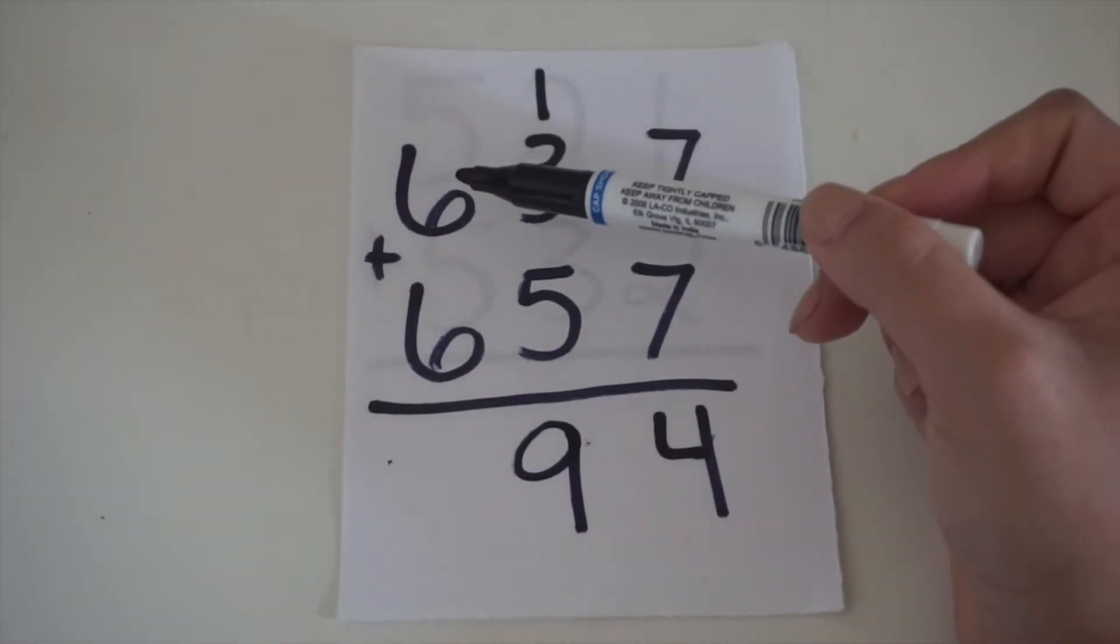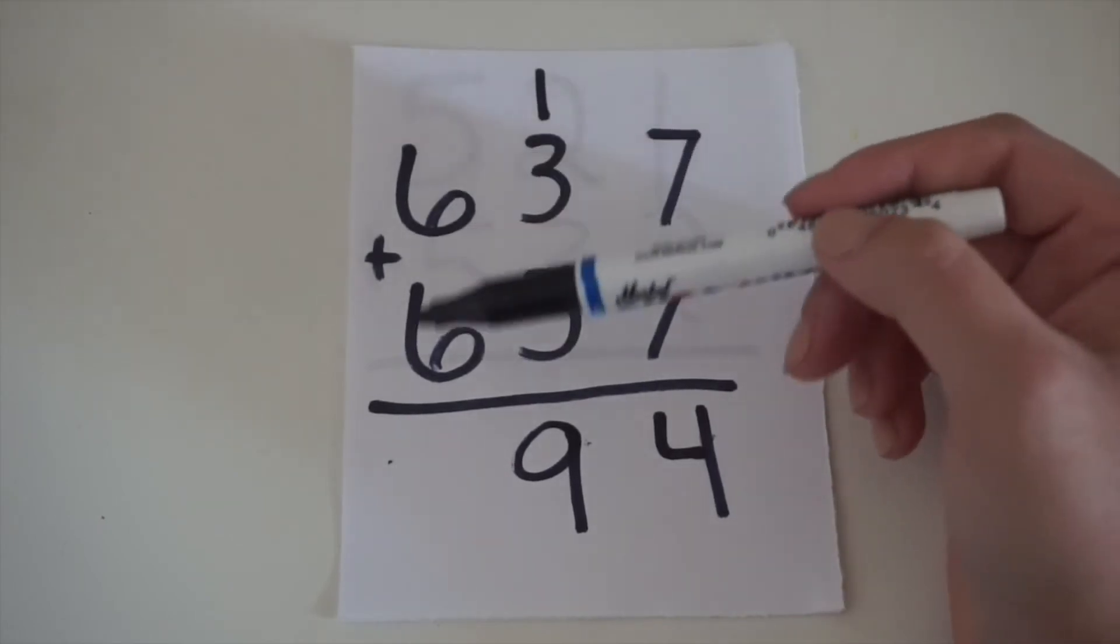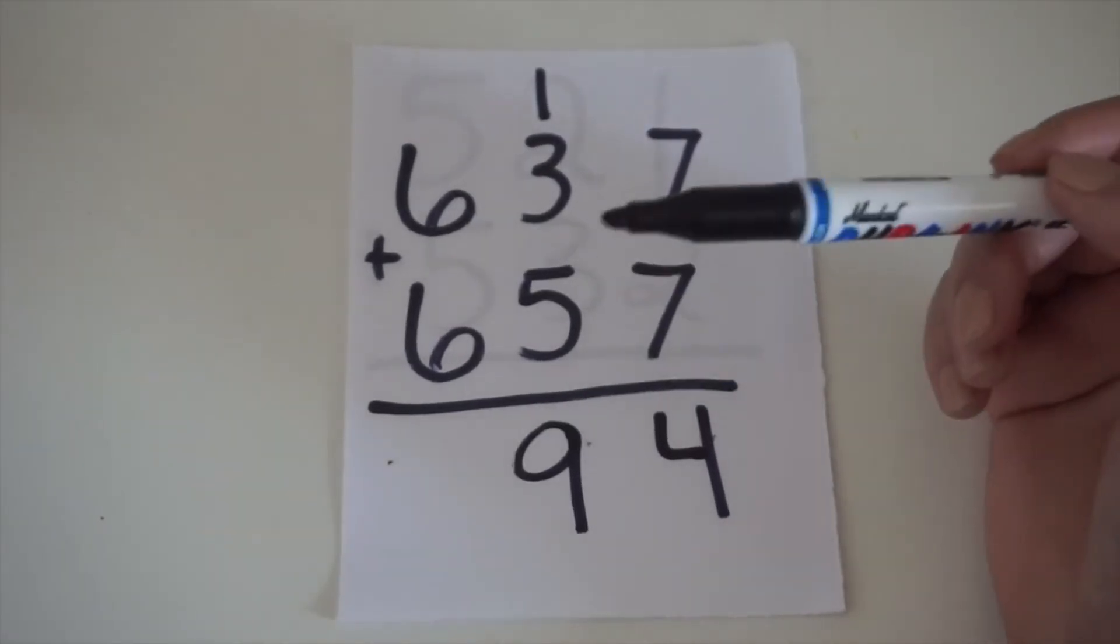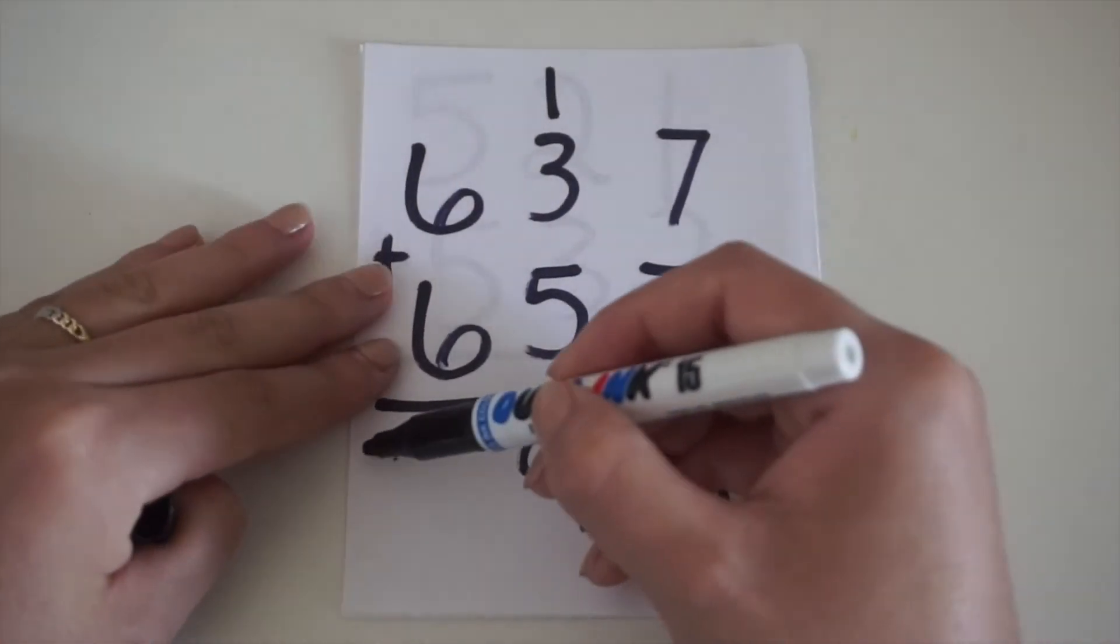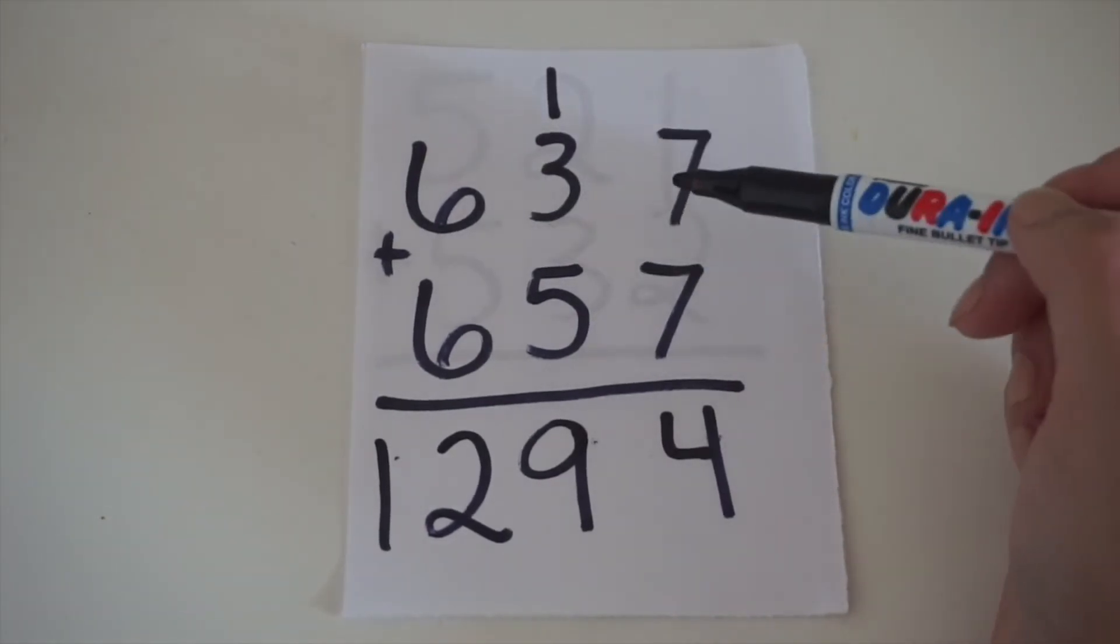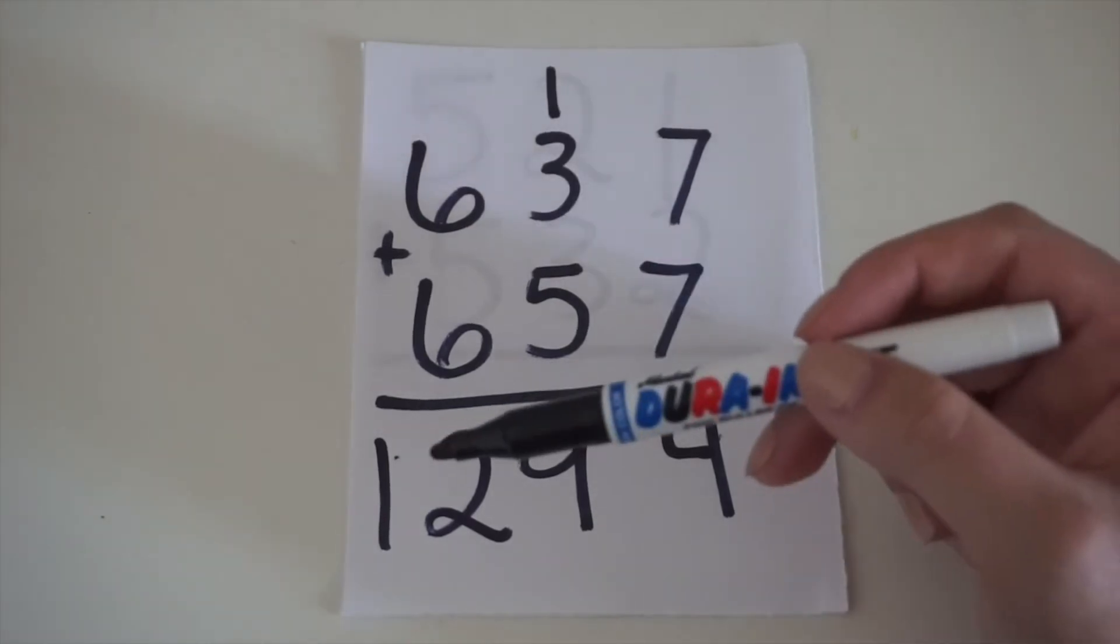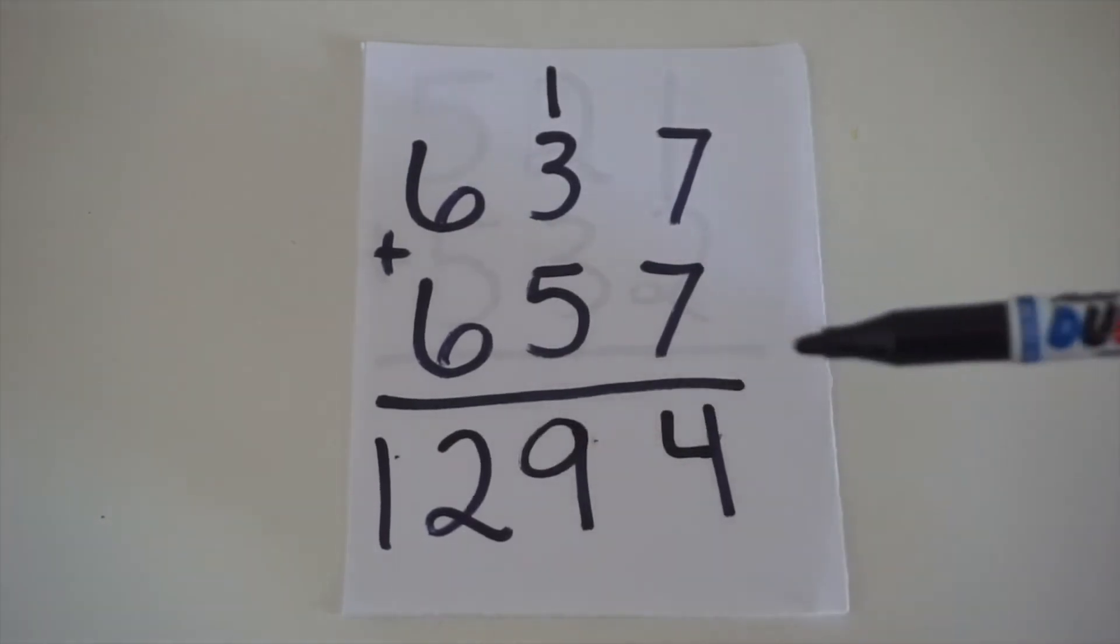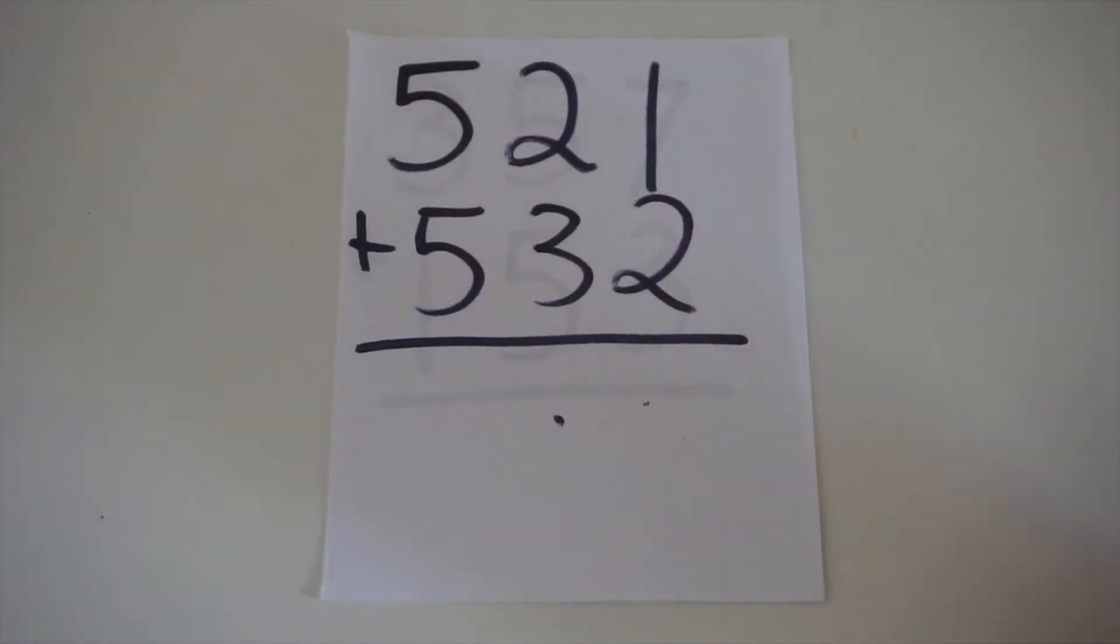And for our 6 plus 6 here, which is on the left side, 6 plus 6 is 12, which is a double digit number. But since it's on the left, we're just going to put that there. So, 637 plus 657 equals 1,294. That's something a little bit harder, but with practice, you can get the hang of it.